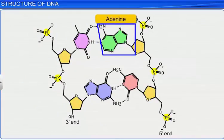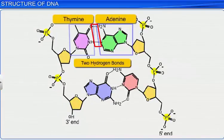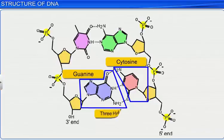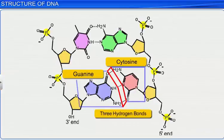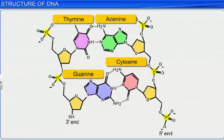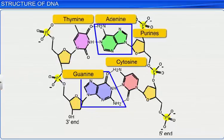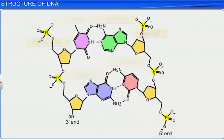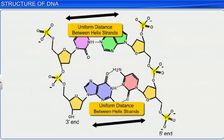Adenine is bonded with thymine from the opposite strand with 2 hydrogen bonds, and vice versa. Similarly, guanine is bonded with cytosine with 3 hydrogen bonds. Because of this structure, a purine always comes opposite to a pyrimidine, which results in a uniform distance being maintained between the two helix strands.